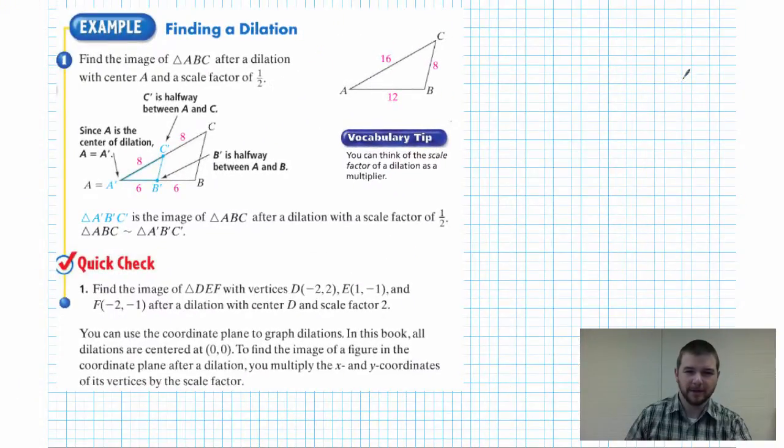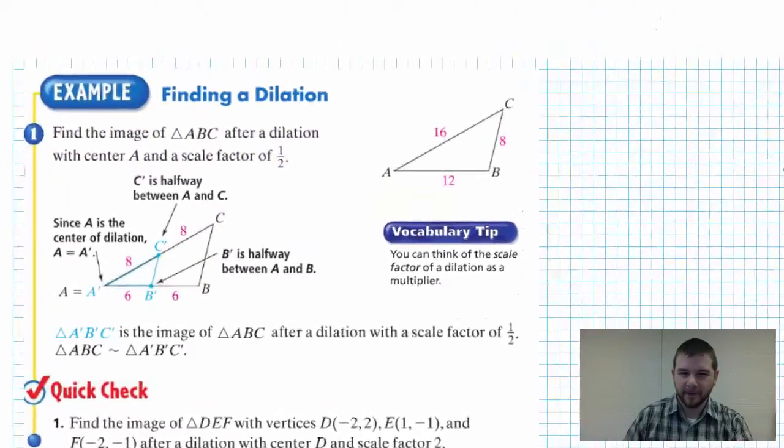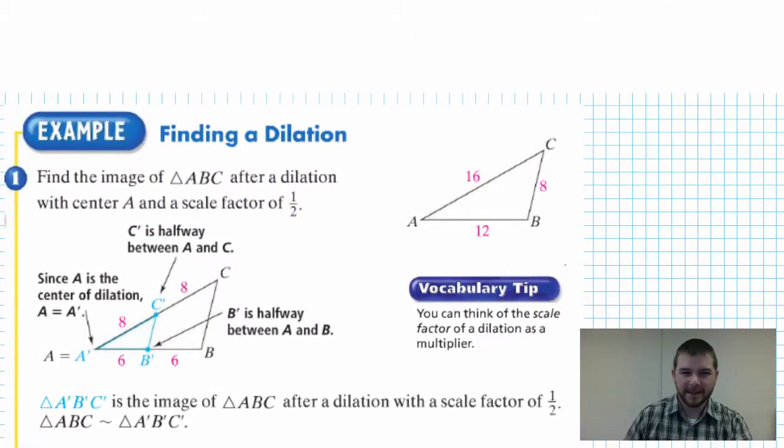Example one gets us thinking about dilations and the concept of a center of dilation. Find the image of triangle ABC after a dilation with center A and a scale factor of one-half. What we should think of is really the distances from A to C and from A to B.